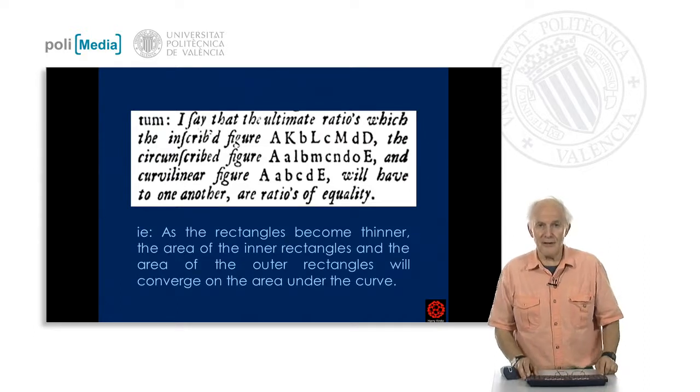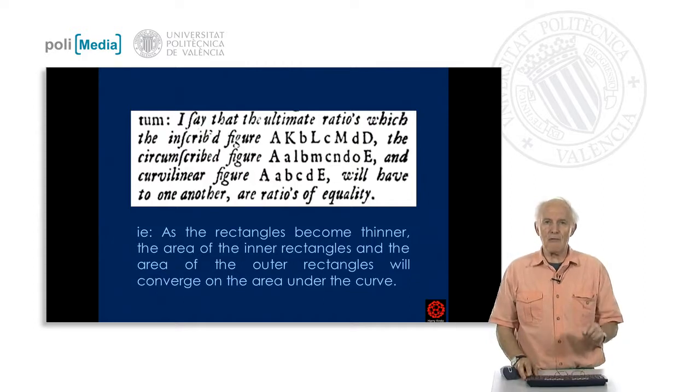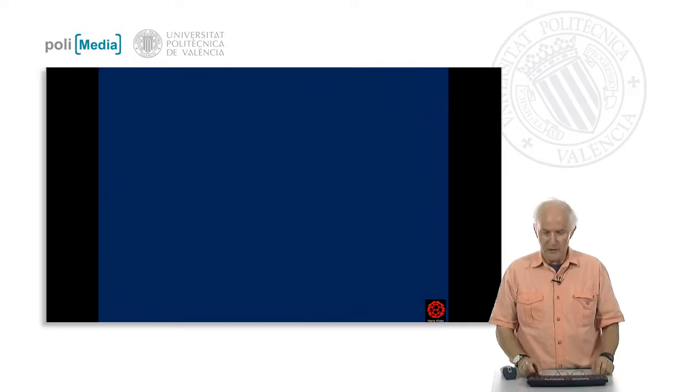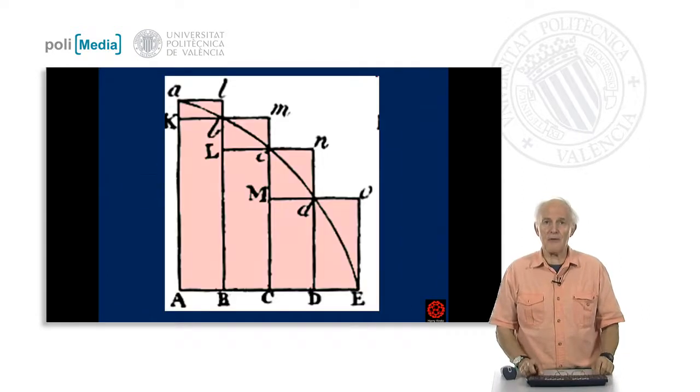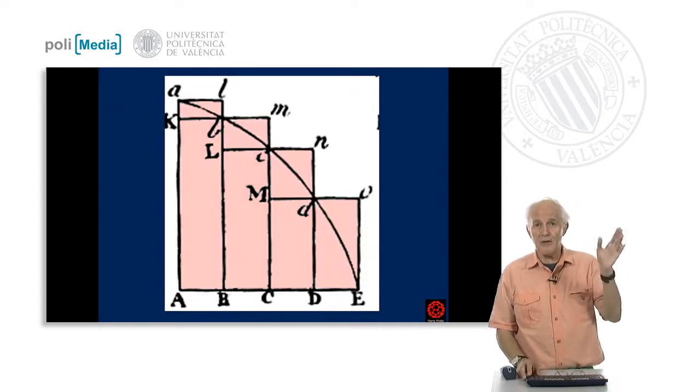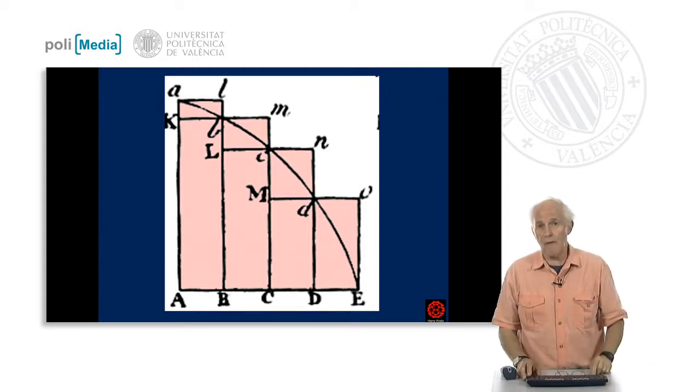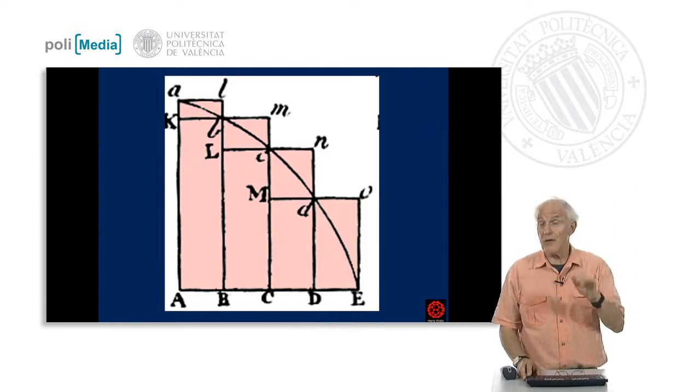So what does he actually say in modern English? He says that as the rectangles become thinner, the area of the inner rectangles and the area of the outer rectangles will converge on the area under the curve. And if we look back at these images, we see that here are the inscribed rectangles, and there here's the circumscribed rectangles. And as we narrow the rectangular widths, we get closer and closer to the area of that curve, or under that curve.